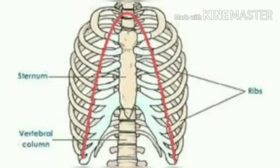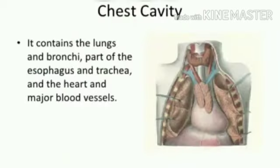The chest cavity is formed of ribs, vertebrae of the backbone, and the breast bone, which you can see here as the sternum. These ribs are joined to the vertebrae of the backbone behind and to the breast bone in the front, as you can see in this diagram.